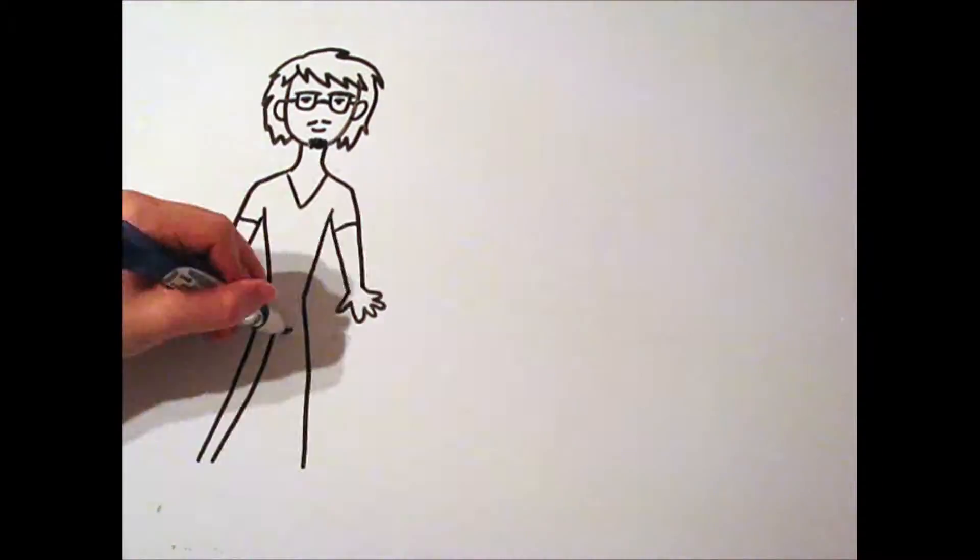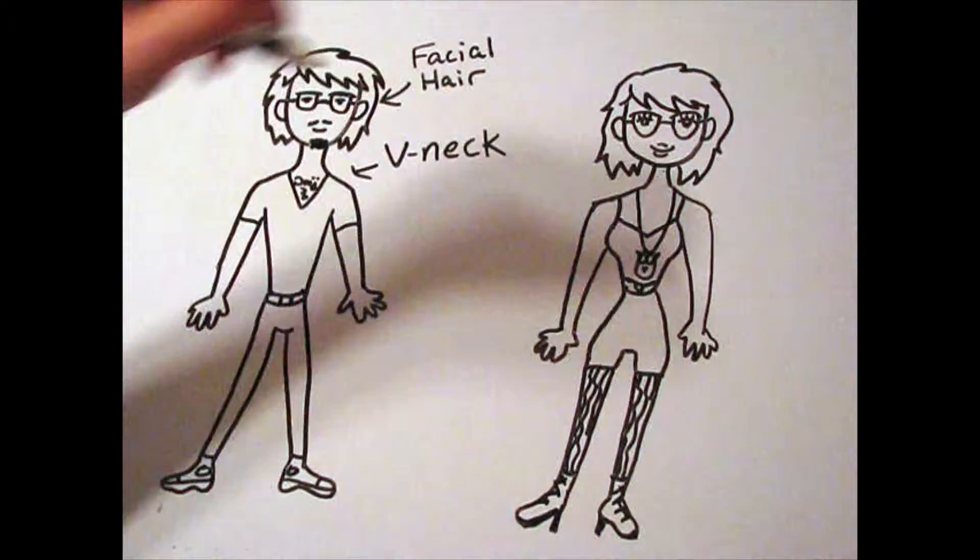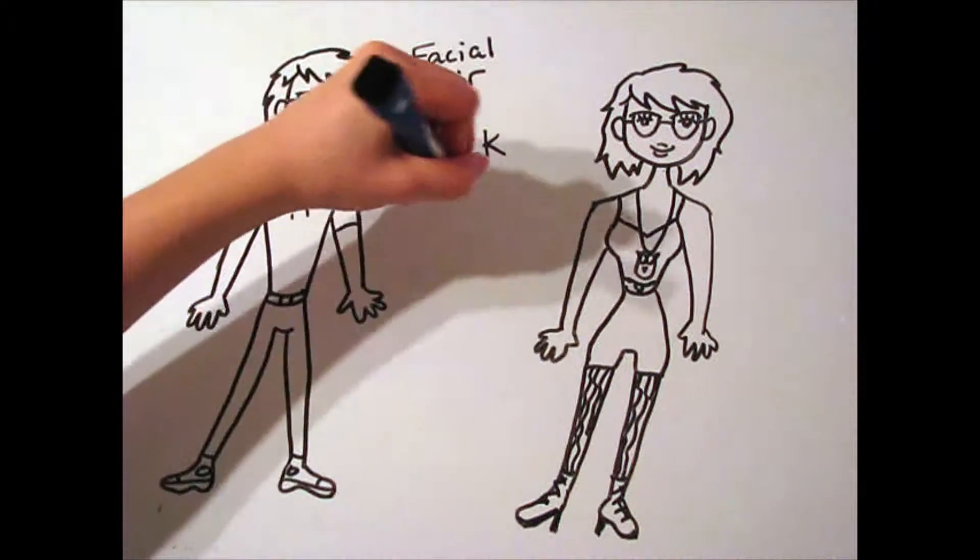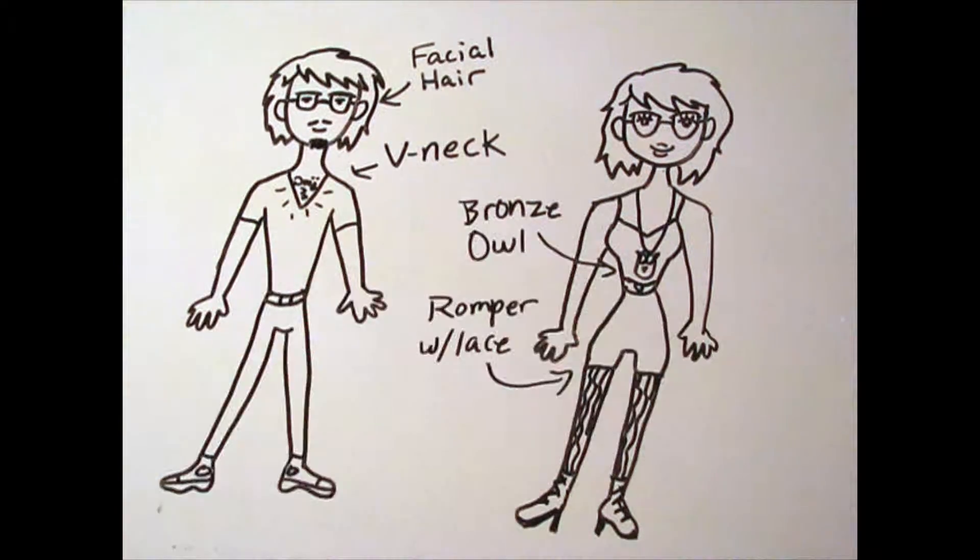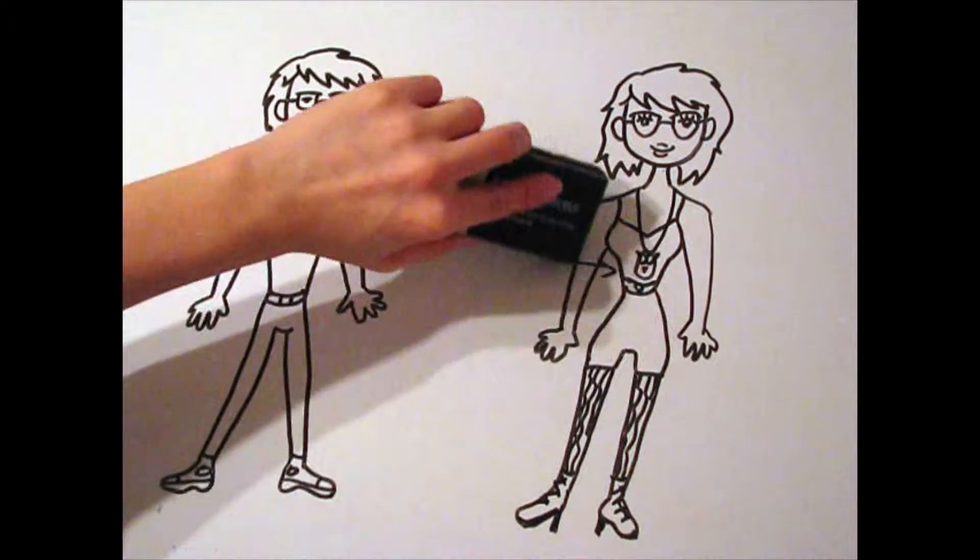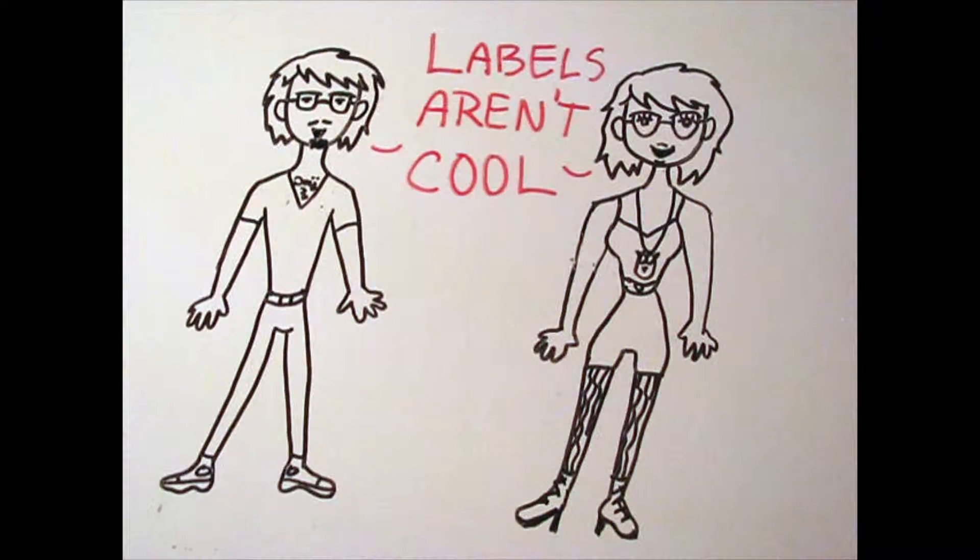There are some gender-specific items to remember. Guys should have either styled or full-on facial hair. Wearing a v-neck will help show off the lovely chest mane. Bronze owl jewelry is perfect for girls, along with a romper and lace tights underneath. Or you can just cast away gender altogether and remain androgynous because you don't want to be labeled.